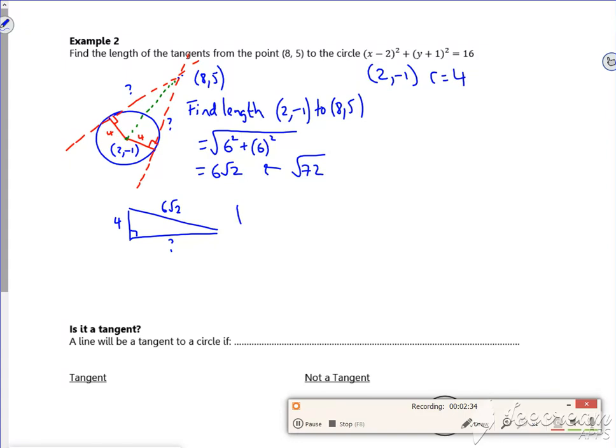And the short side is 4. So the length of my tangent will be the square root of my root 72 squared minus 4 squared.